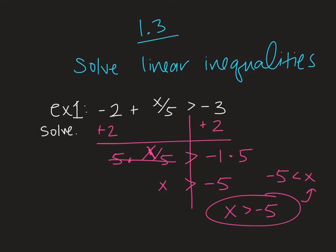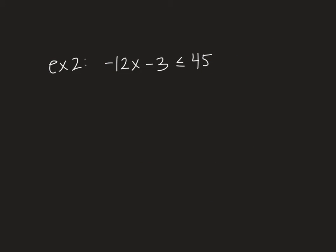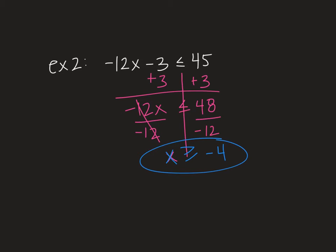Second example: again, we are just going to pretend that this inequality is an equation. The only time you have to do anything different is if we multiply or divide both sides by a negative, you have to flip the sign. So we're going to add 3 to both sides. We'll have negative 12x is less than or equal to 48. Then we need to divide both sides by negative 12. Since we're dividing both sides by a negative, we have to flip the sign. So it becomes x is greater than or equal to negative 4.